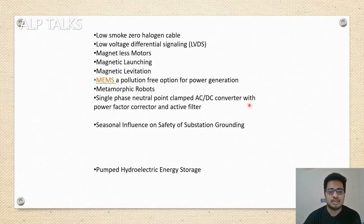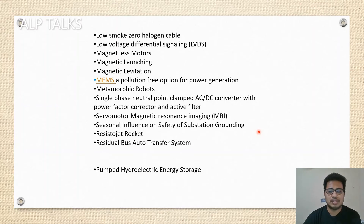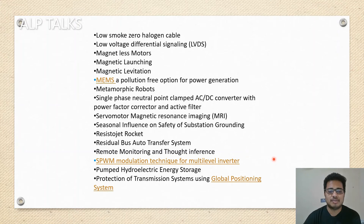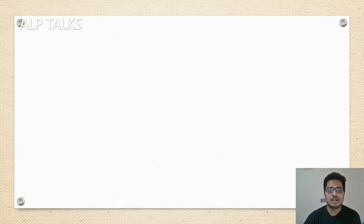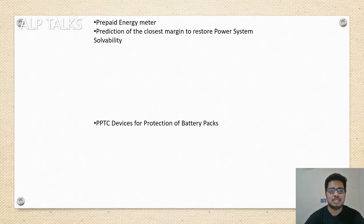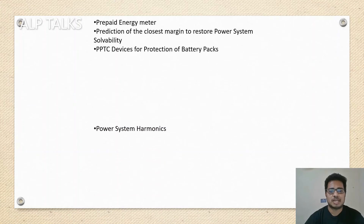Single phase neutral point clamped AC-DC converter with power factor correction and AC filter. Servo motor. Magnetic resonance imaging — MRI. Resistor jet rocket. Residual bus auto transfer system. Remote monitoring and fault interference. SPWM modulation technique for multi-level inverter — this is mostly important in power electronics and power conversion processes. Protection of transmission system using global positioning system. Prepaid energy meter. Prediction of closest margin to restore power system solvability. PPTC devices for protection of battery packs.